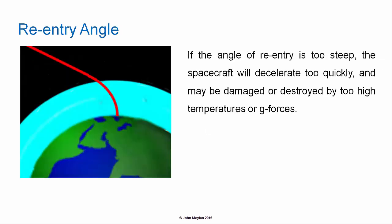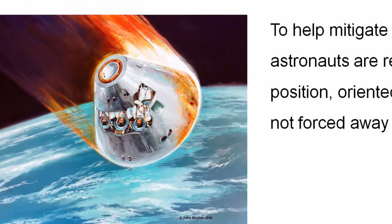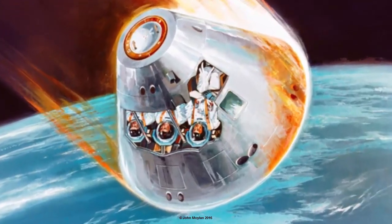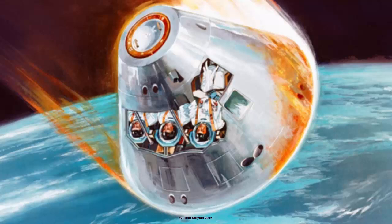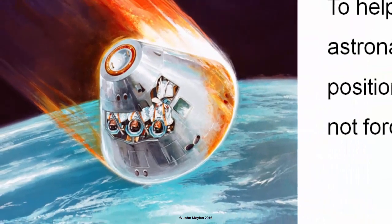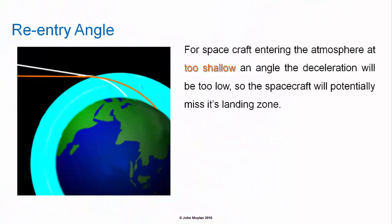If the angle of re-entry is too steep, the spacecraft will decelerate too quickly and may be damaged or destroyed by higher temperatures or g-forces. To help mitigate the high g-forces, astronauts are restrained in a recumbent position oriented so as to ensure blood is not forced away from the brain. For a spacecraft entering the atmosphere at too shallow an angle, the deceleration will be too low, so the spacecraft will potentially miss its landing zone.